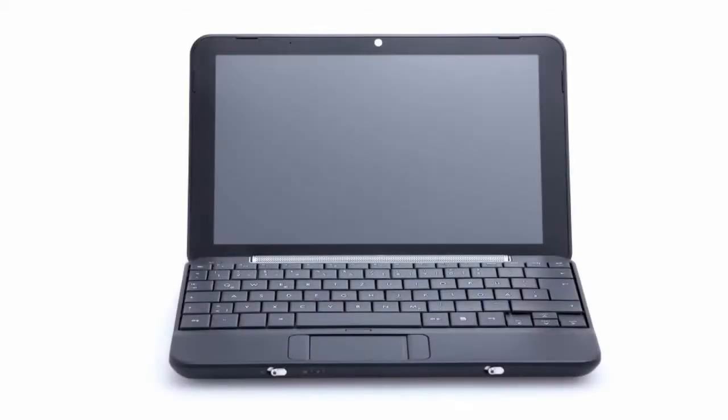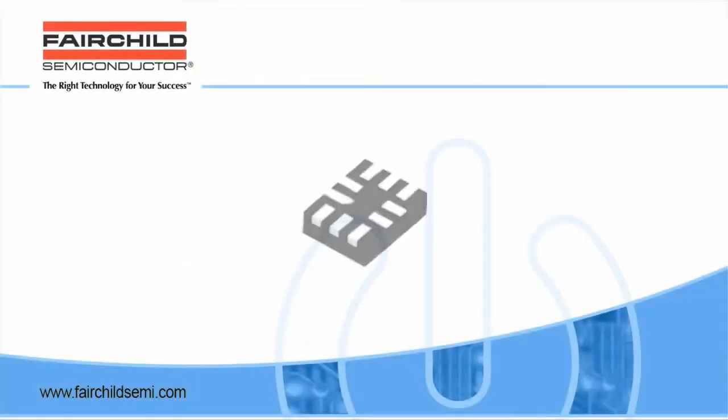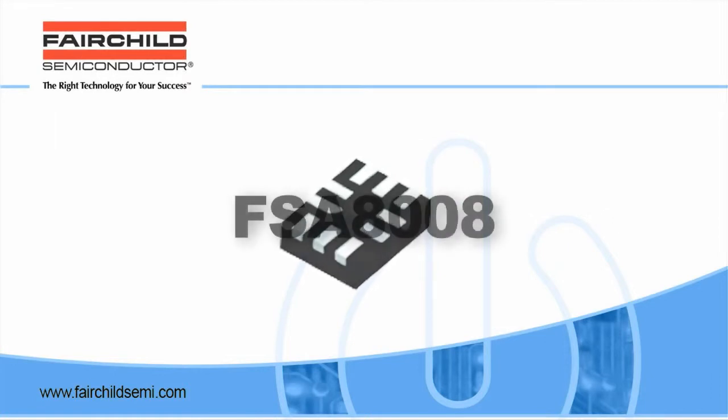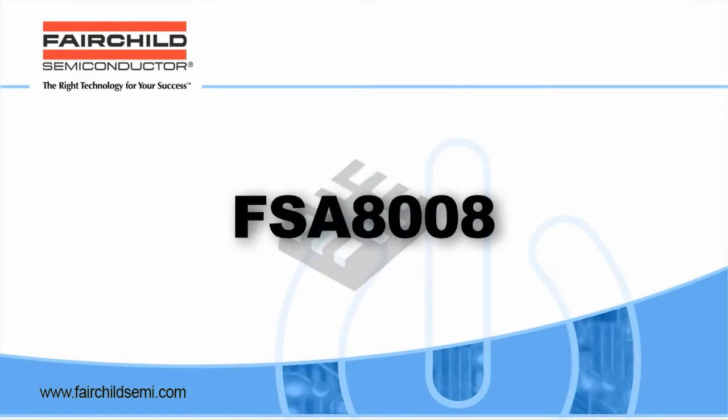Today, cell phones and netbooks use 2.5 or 3.5 millimeter audio jacks. These audio jacks must detect and accept both headphones and headsets with a microphone.